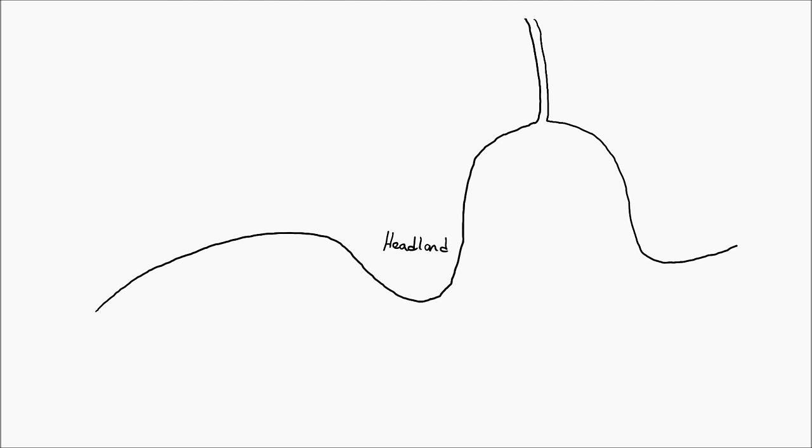In this specific diagram we're going to be marking in two bays and two headlands. Now it's important that in one of the bays we put a river because this river is going to help the formation of a spit. Without it, a spit could not form.